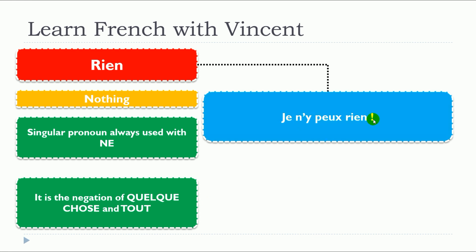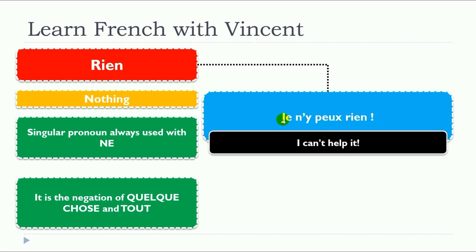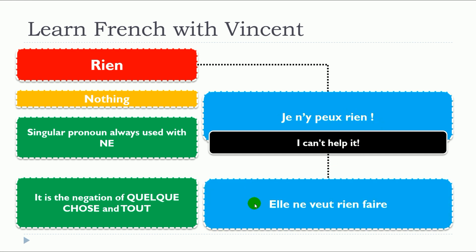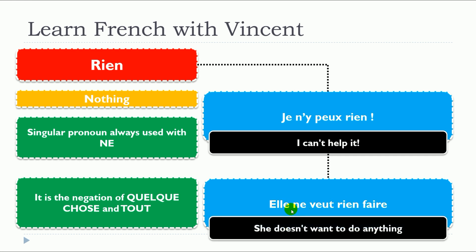Je n'y peux rien. Elle ne veut rien faire. So you can see that ne is here and then rien will be after — ne is here and rien is right after, so before and after your verb.